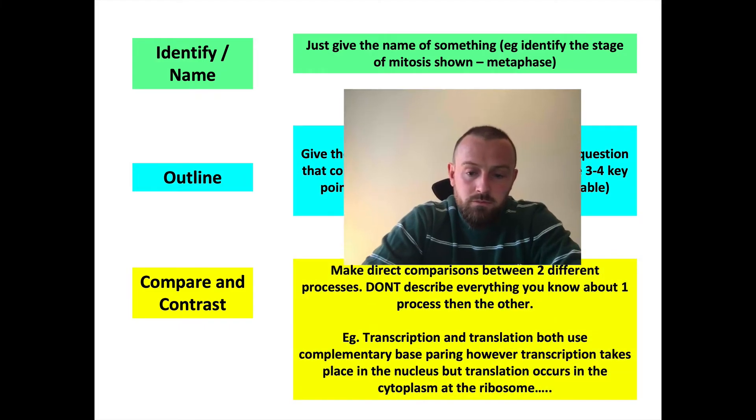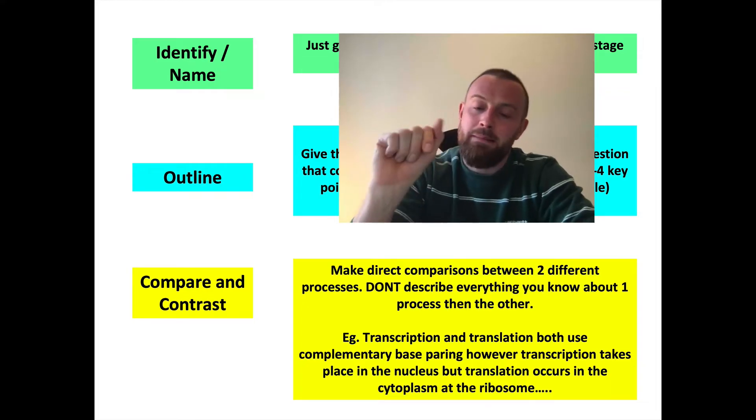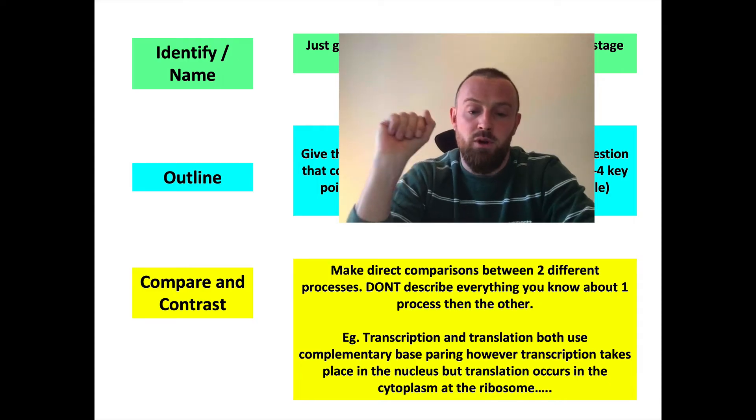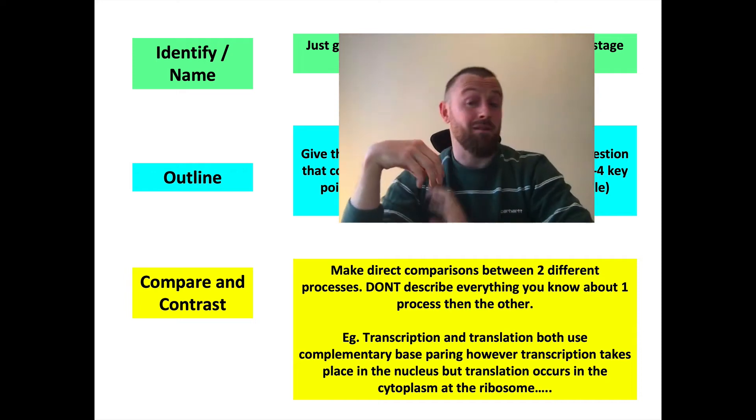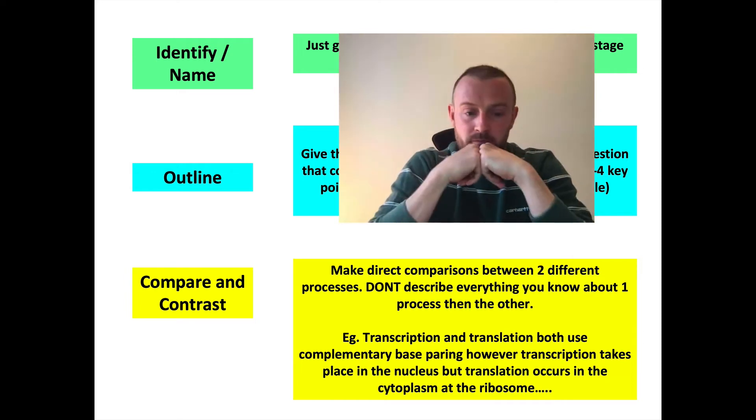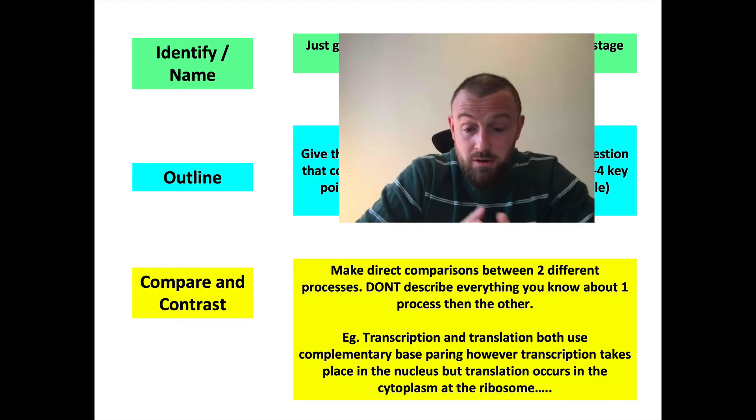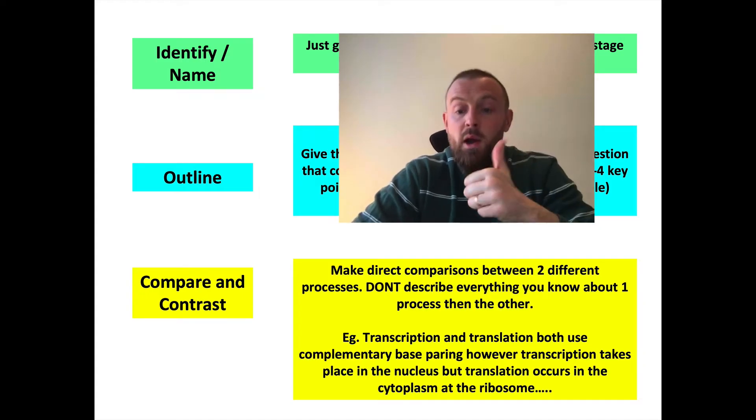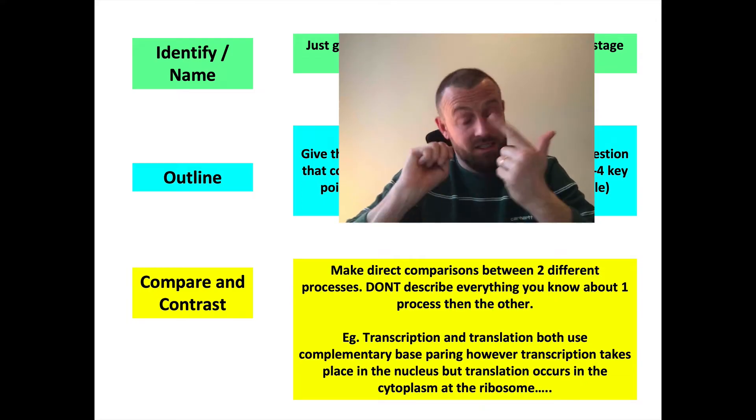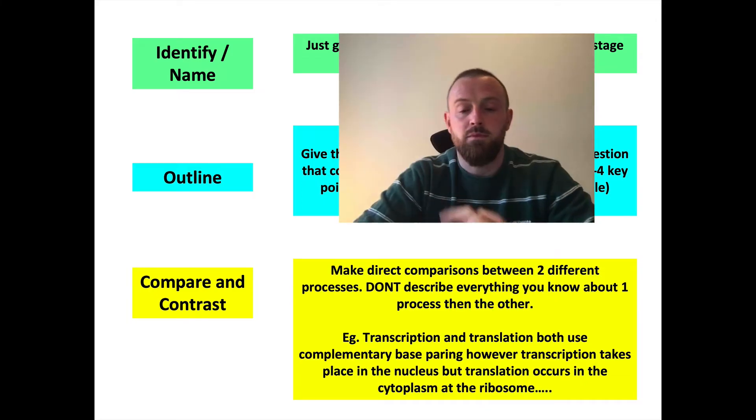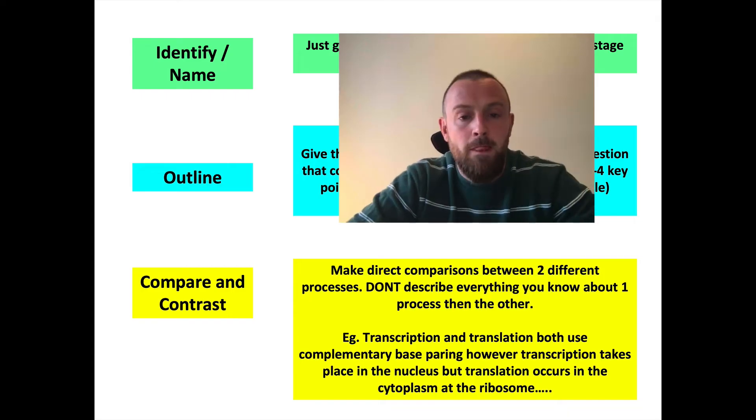Compare and contrast. This is an important one. I'm going to spend a bit of time on this later on. This means make direct comparisons between two different processes. What you don't want to do is describe everything about the first process and then describe everything about the second process. For example, if it said compare and contrast the processes of transcription and translation, you might write: transcription and translation both use complementary base pairing - that's one mark. However, transcription takes place in the nucleus, but translation occurs in the cytoplasm at ribosomes - that's the second mark. Then you would go on to get more marks in a six marker.